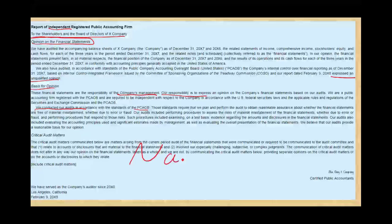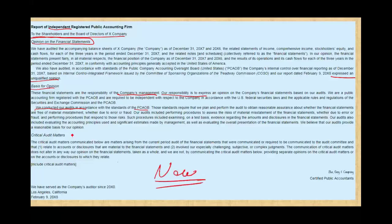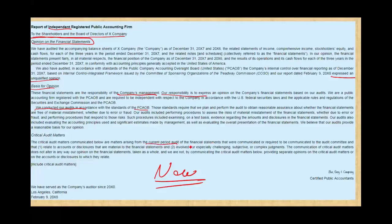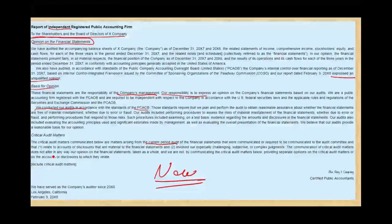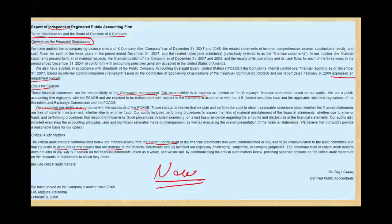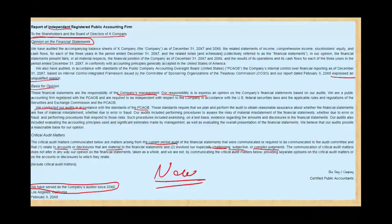The new topic is the critical audit matters. The critical audit matters communicated are matters arising from the current period only — you could reference other periods, but you are only required to include the current period of the financial statements. These are matters that were communicated or required to be communicated to the audit committee, and relate to accounts or disclosures that are material to the financial statements, involving especially challenging, subjective, or complex judgment. Then we have the auditor's tenure — 'We have served as the company's auditor since...' — and then the signature and date.